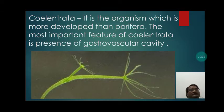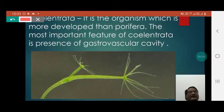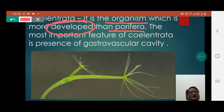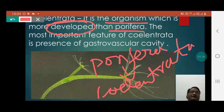Coelenterata is an organism which is more developed than Porifera. It is actually a group of organisms which is more advanced in comparison to Porifera. We can also say that just after Porifera, the Coelenterata started originating on earth.